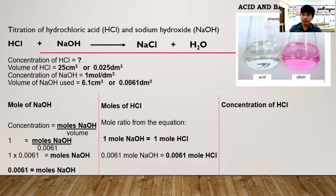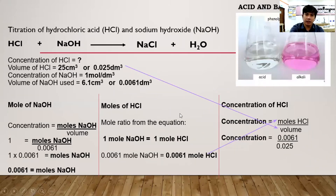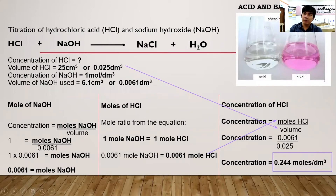For the concentration of HCl: concentration = moles / volume = 0.0061 / 0.025 = 0.244 mol/dm³. So the concentration of hydrochloric acid used during this titration is 0.244 mol/dm³.